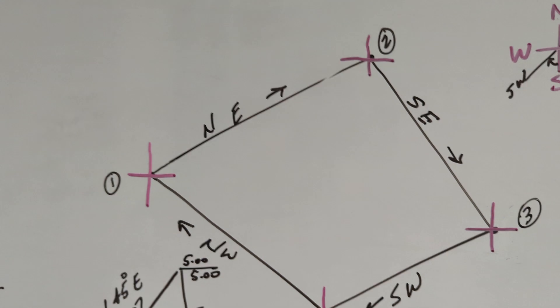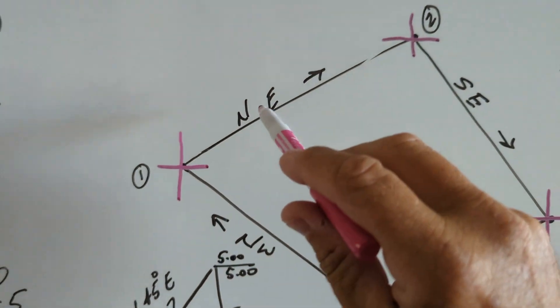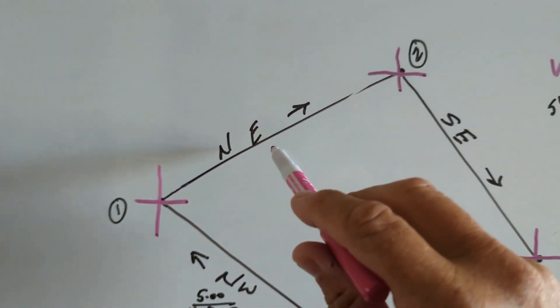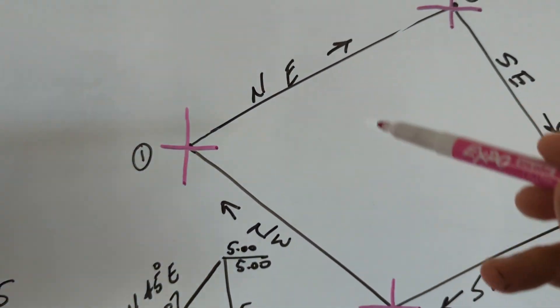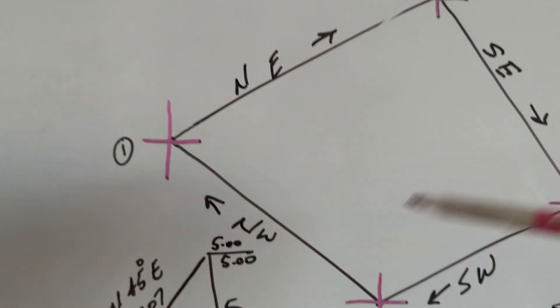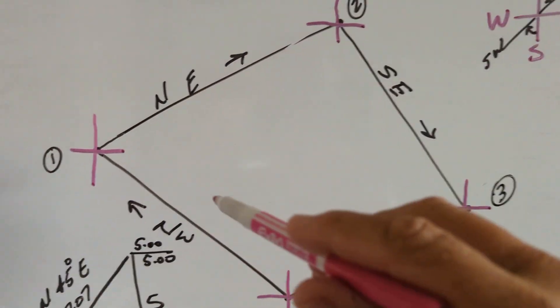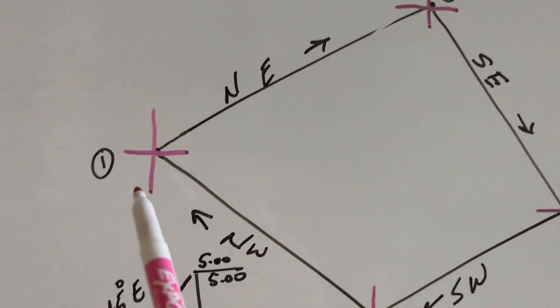But what I was trying to show him is why or how we use bearings in calculations and as opposed to an azimuth. So you had to break an azimuth down to a bearing to use it as a calculation.